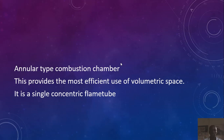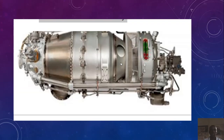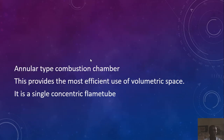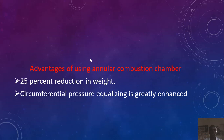Moving to the annular type combustion chamber, or basket type. This provides the most efficient use of volumetric space. It is a single concentric flame tube. Advantages of using the annular combustion chamber include a 25% reduction in weight, because we just have one section as a whole, and circumferential pressure equalizing is greatly enhanced.